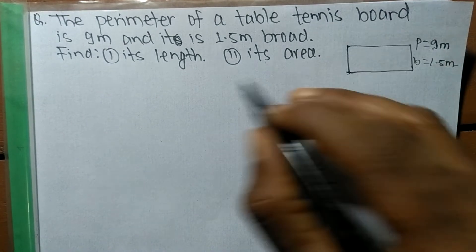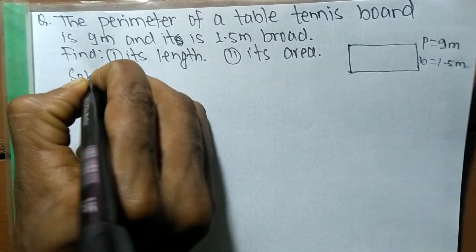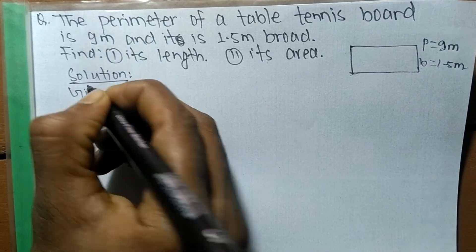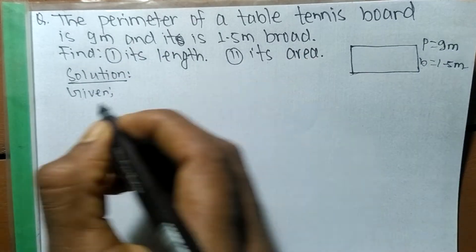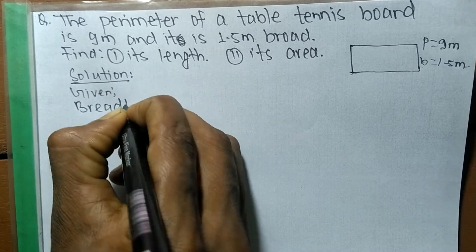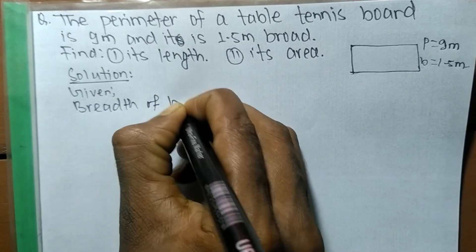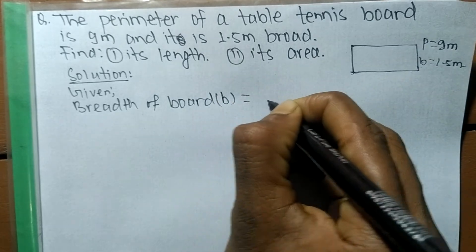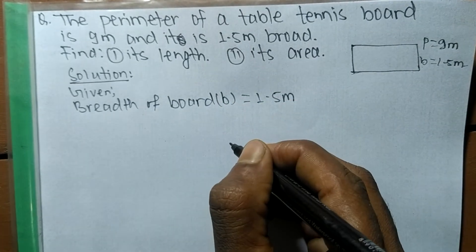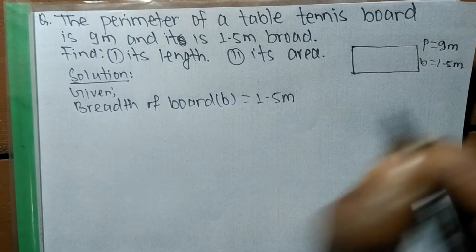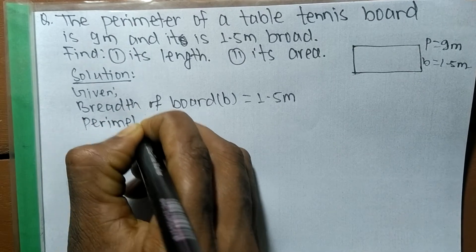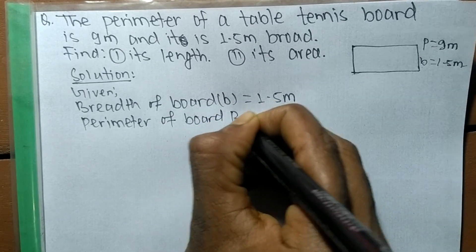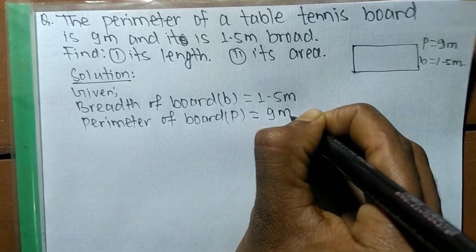For the solution of this word problem, first we write what is given. Breadth of the table tennis board, denoted by b, is equal to 1.5 meters. Also, the perimeter of the table tennis board, denoted by P, is equal to 9 meters.